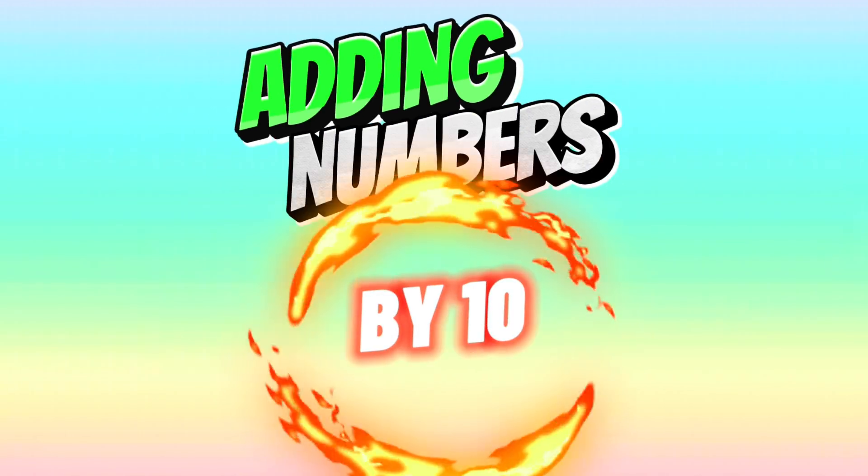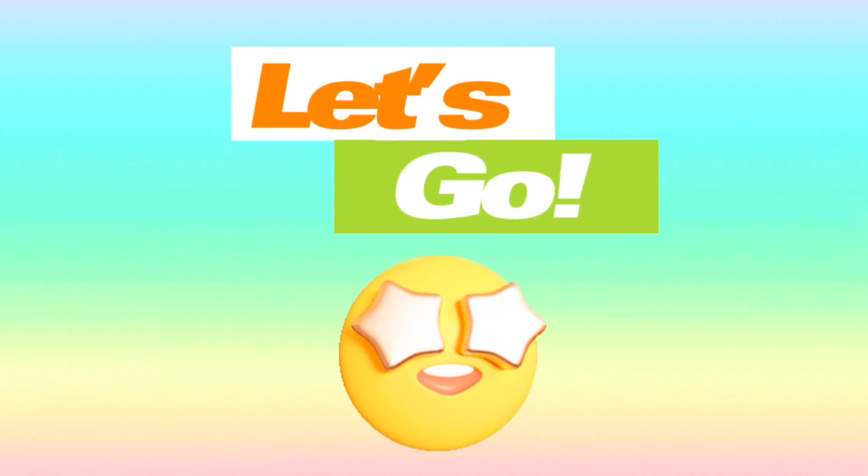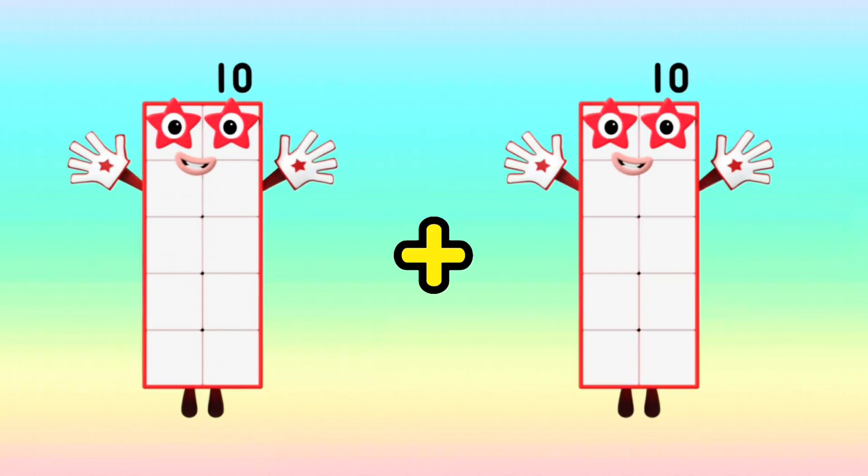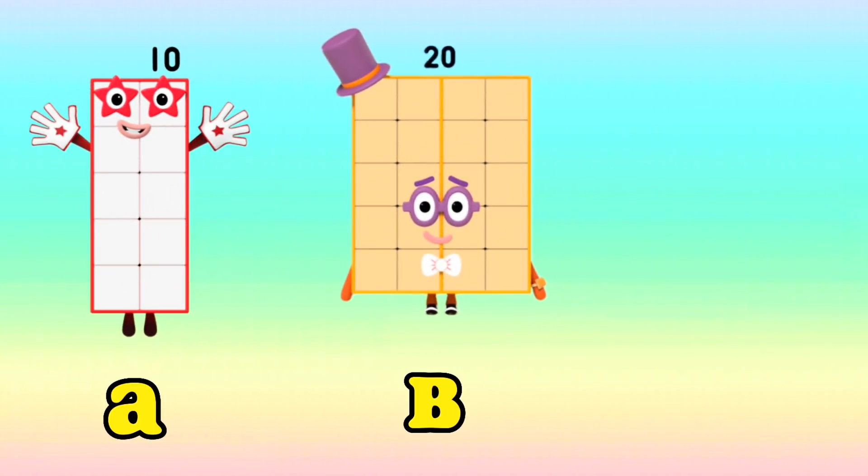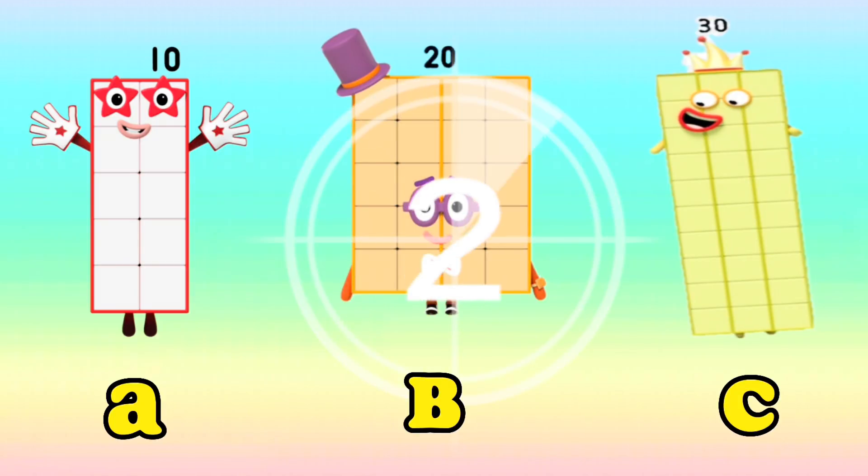Adding numbers by 10. Let's go! 10 plus 10 is equals to... Is it letter A: 10, letter B: 20, letter C: 30? And the answer is letter B: 20.